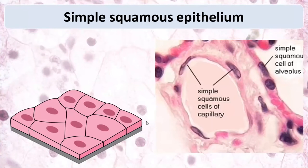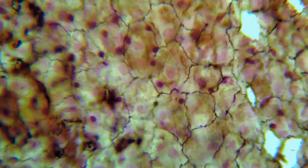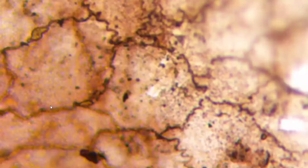Simple squamous epithelium has one layer of flat cells arranged in one layer, with all cells located on the basement membrane. Here we can see simple squamous cells of a capillary and a drawing of a histological slide showing cells of simple squamous epithelium in the mesothelium, with cell boundaries, cytoplasm, and nuclei visible from the upper view. A microphotograph shows the same — cells with squamous shape — which is why this type is called simple squamous.